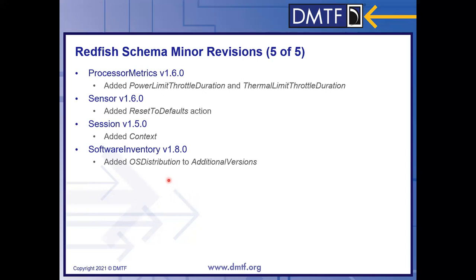Lastly, in software inventory, one more possible version type has been added — an OS distribution. So not just a kernel version, but an entire OS distribution, for pieces of software that may include a real bundle of an operating system plus an application load. This is a way to show what it was built on, for the sake of being able to pull that information out for security notices and so forth.